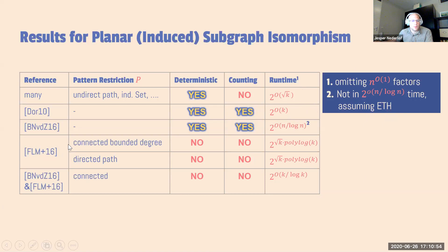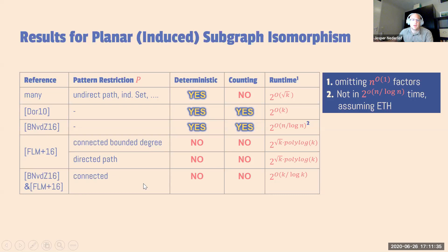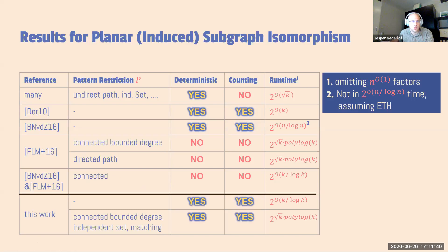Fomin et al. gave many patterns where there was a 2 to the square root K kind of running time. Before this was only known for a restricted set of patterns; they managed to extend it, but unfortunately their algorithms were randomized and didn't extend to the counting setting. Combining those two results gives an algorithm for general connected patterns in time 2 to the K over log K, but again randomized and not working for counting. Open questions included: can we get 2 to the K over log K for general patterns, can we de-randomize, and can we extend to the counting setting? In this work, we resolve all these things in the affirmative.